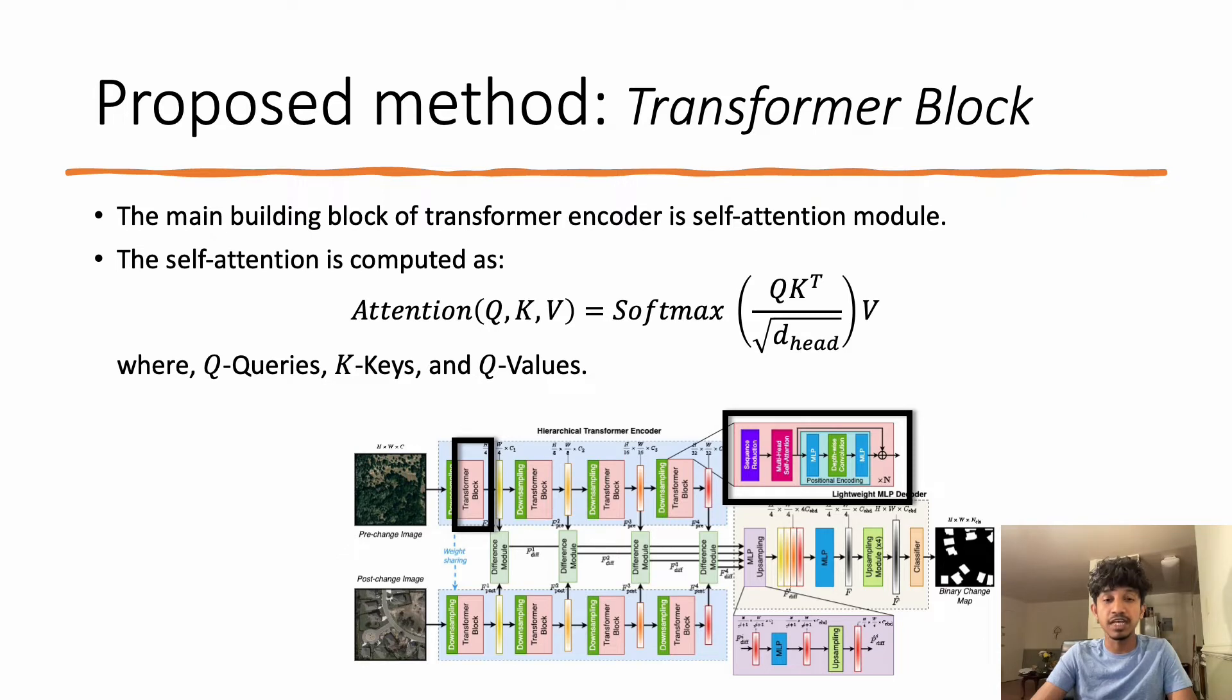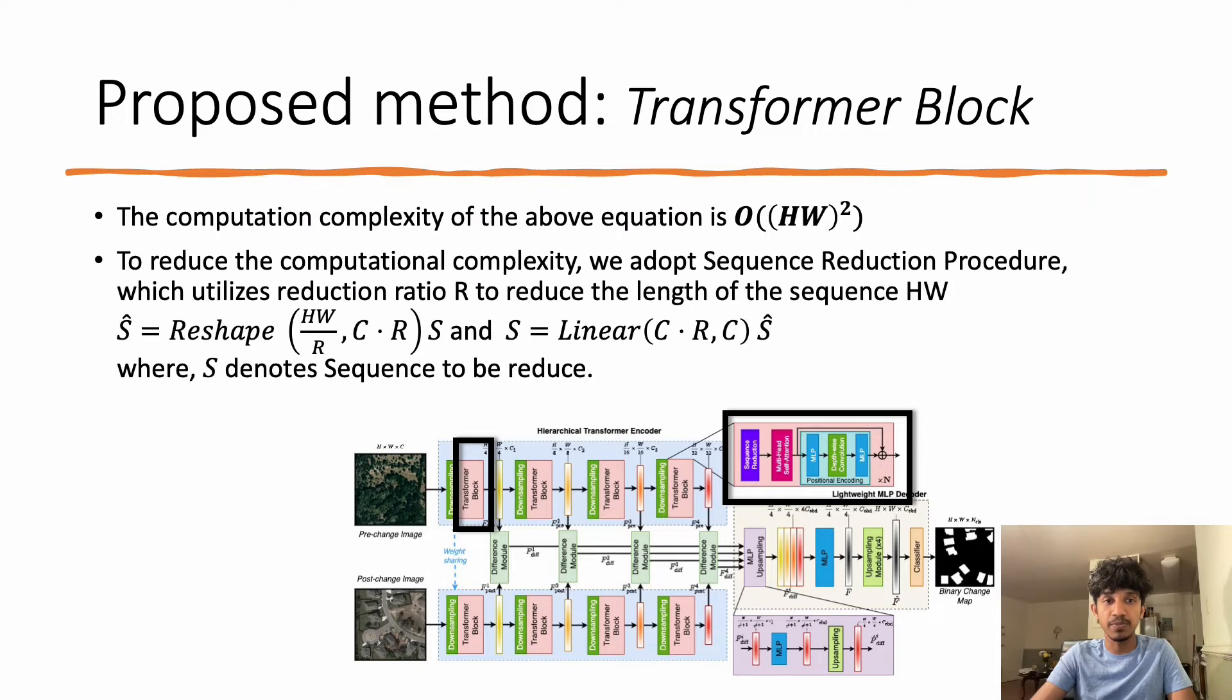Self-attention is estimated according to this equation. Here Q, K, and V denote Query, Key, and Value, and have the same dimension of HW × C. However, the computational complexity of the previous equation is in the order of HW squared.